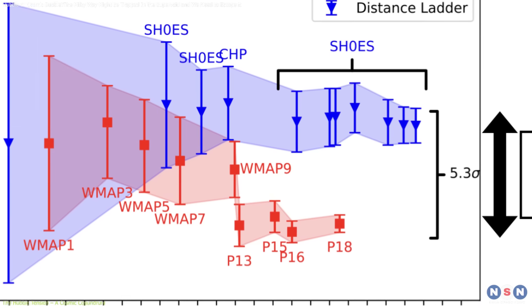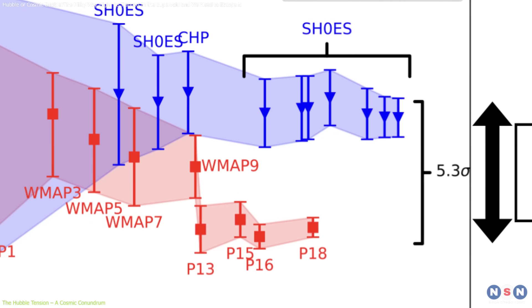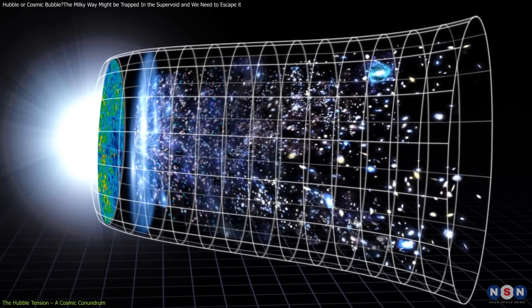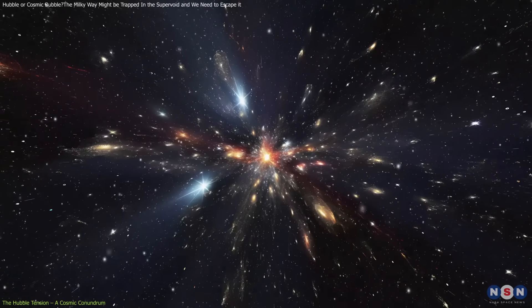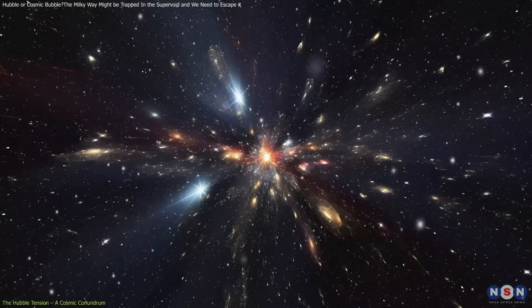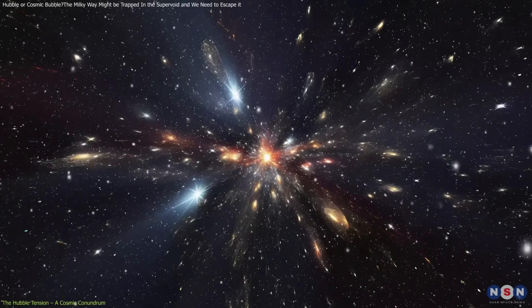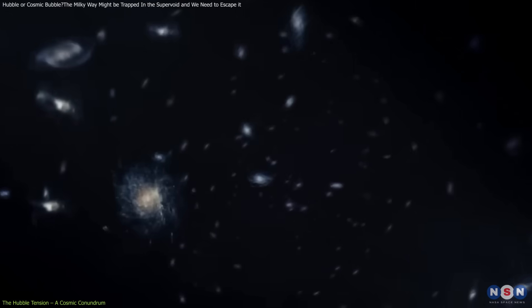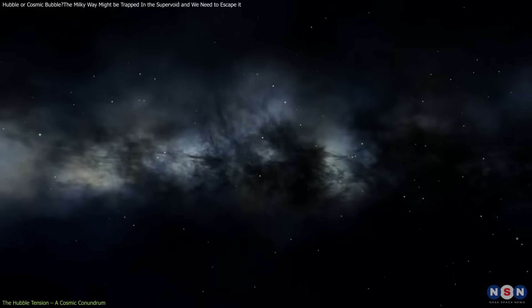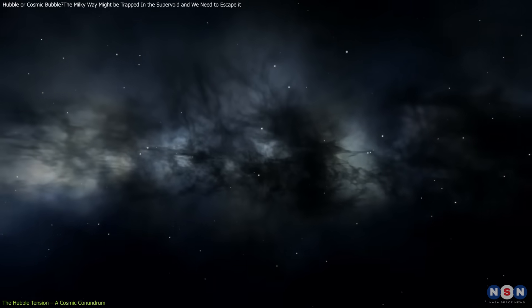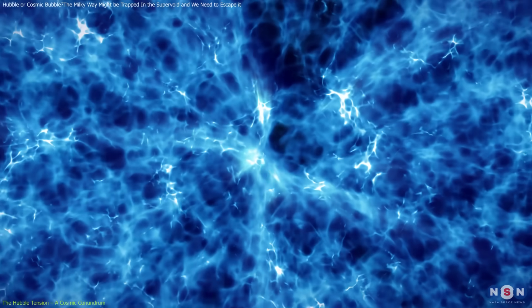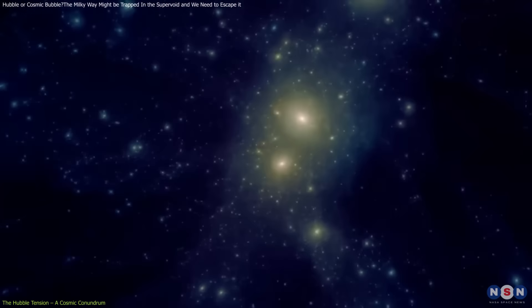This discrepancy of about 8% might seem small, but it challenges the lambda-CDM model and suggests that our understanding of the universe's evolution might be incomplete. Resolving this tension is crucial for cosmology, as it could confirm or upend our current theories about dark matter, dark energy, and the universe's fundamental structure.